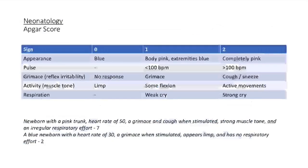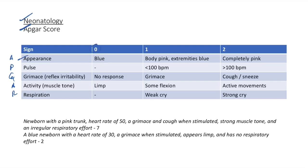APGAR score mnemonic is the name APGAR: A = appearance (blue=0, body pink/extremities blue=1, completely pink=2), P = pulse rate (absent=0, less than 100=1, greater than 100=2), G = grimace/reflex irritability (no response=0, grimace=1, cough or sneeze=2).